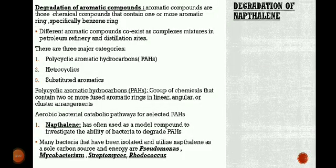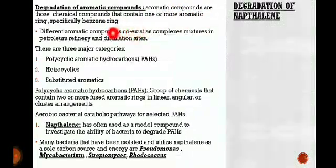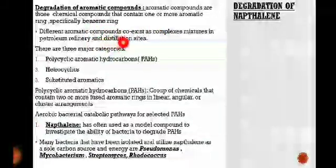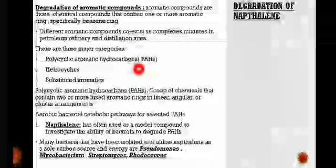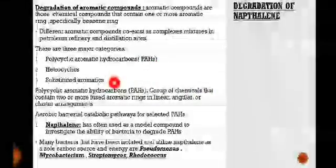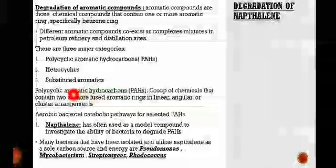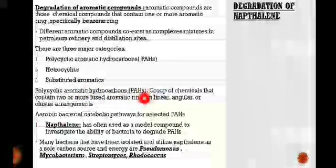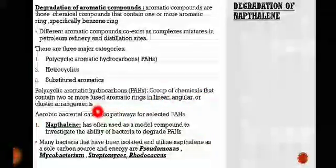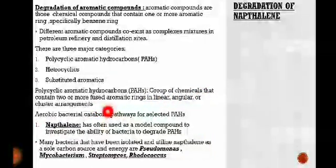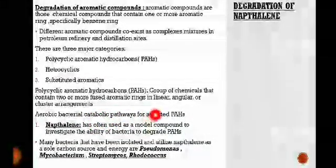Degradation of aromatic compounds. Aromatic compounds are chemical compounds that contain one or more aromatic rings, specifically benzene rings. Different aromatic compounds co-exist as complex mixtures in petroleum refinery and distillation sites. There are three major categories: polycyclic aromatic hydrocarbons (PAHs), heterocyclic, and substituted aromatics. PAHs are a group of chemicals that contain two or more fused aromatic rings in linear, angular, or cluster arrangement, and they are sometimes human carcinogens.